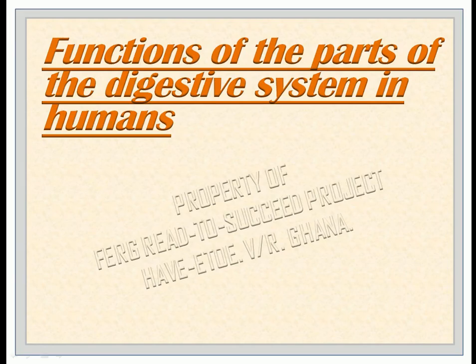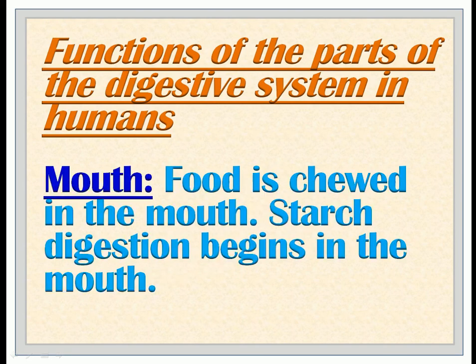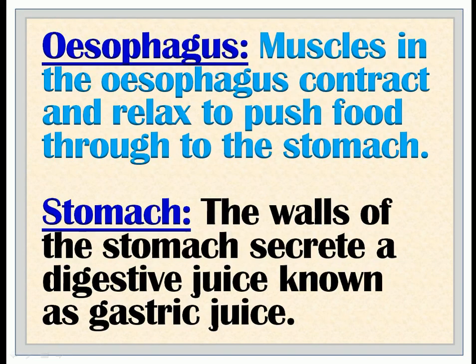Functions of the parts of the digestive system in humans. Food is chewed in the mouth. Starch digestion begins in the mouth. Muscles in the esophagus contract and relax to push food through to the stomach.